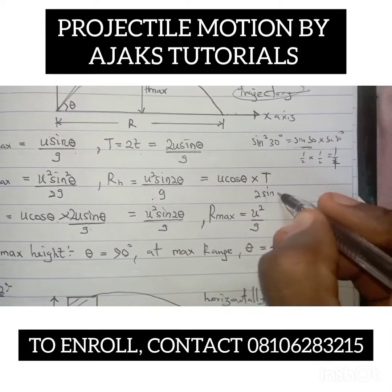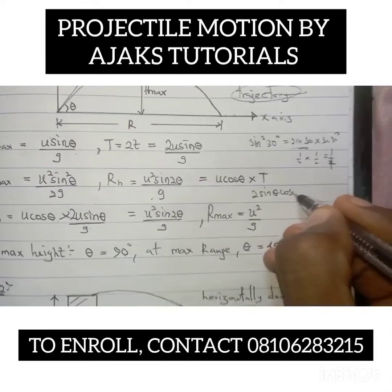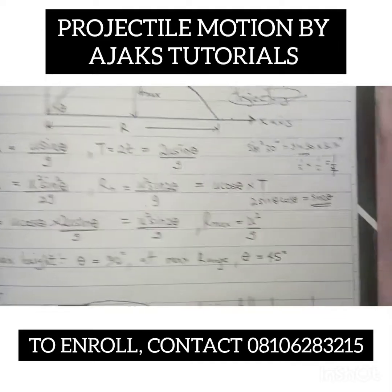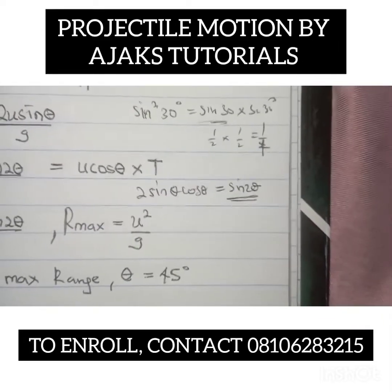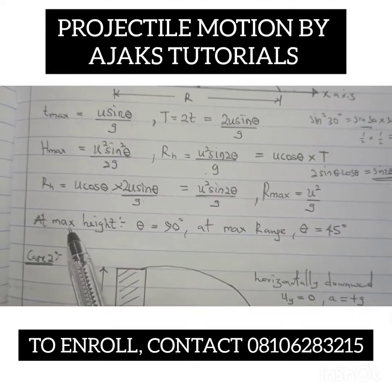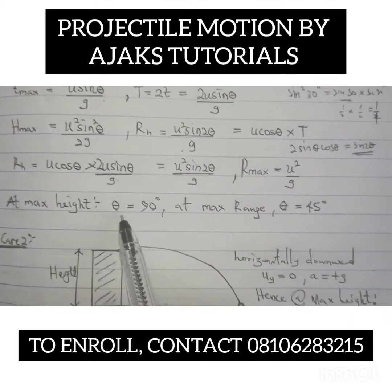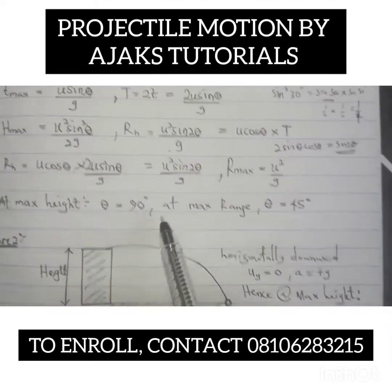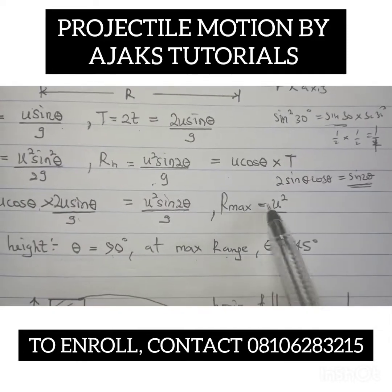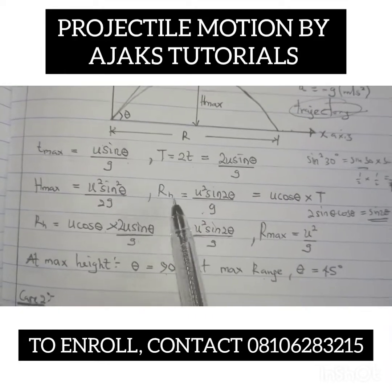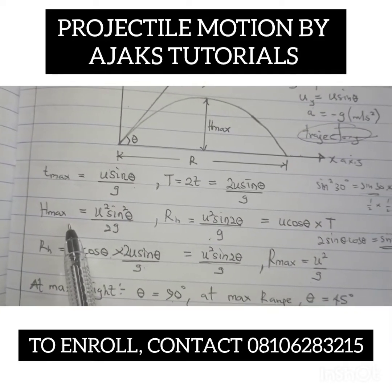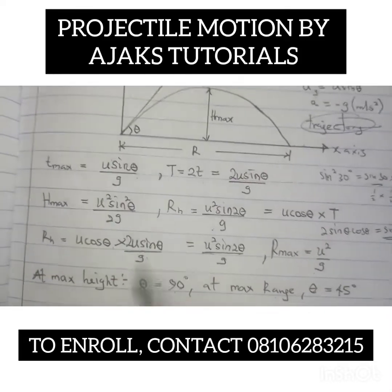So 2 sine theta cosine theta equals sine 2 theta — that trig identity is used to derive the range formula. Also take note: at maximum height, theta equals 90°, and at maximum range, theta equals 45°. So maximum range is U² over G. Maximum range, horizontal range, and maximum height are all measured in meters, and time is in seconds.